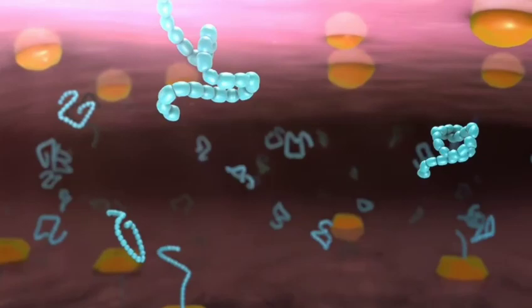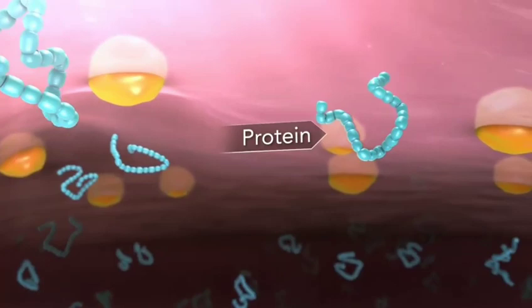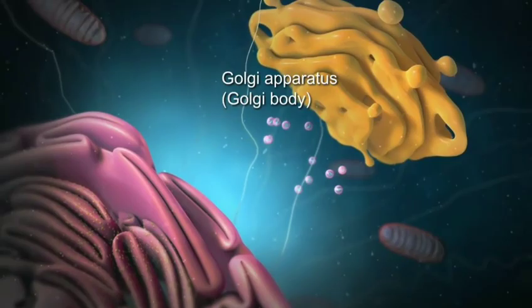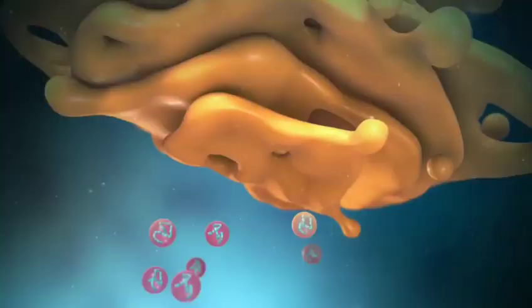The endoplasmic reticulum is a membrane-enclosed passageway for transporting materials, such as the proteins synthesized by ribosomes. Proteins and other materials emerge from the endoplasmic reticulum in small vesicles, where the Golgi apparatus, sometimes called the Golgi body, receives them.